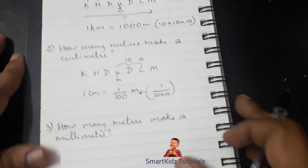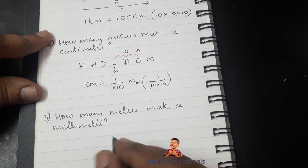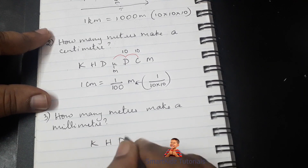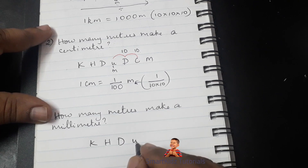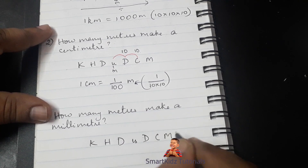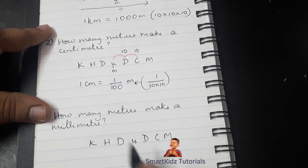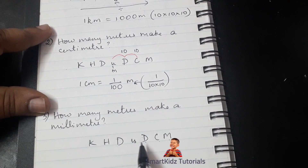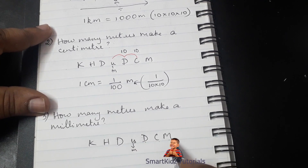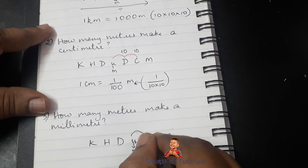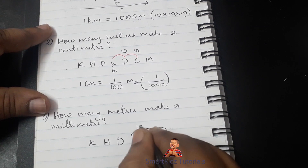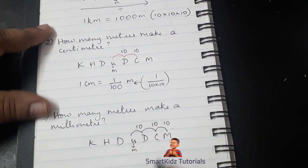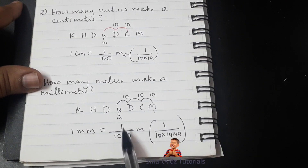Let's move to the next question: how many meters make a millimeter? Once again we write K, H, D — King Henry Died — U for the unit which is meter — Drinking Chocolate Milk — then decimeter, centimeter, and millimeter. We are asked how many meters make a millimeter. Meter is here and millimeter is here, so we're moving to our right — divide — three places: 10 × 10 × 10 = 1000. So 1 millimeter equals 1/1000 of a meter.